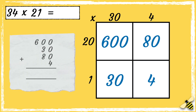Now that everything has been multiplied, we can add the numbers inside the box to get our answer. So first we have 4. Then 3 add 8 is 11. And 6 add 1 is 7. So the answer is 714.